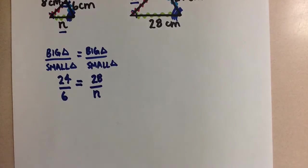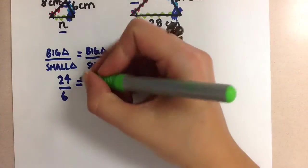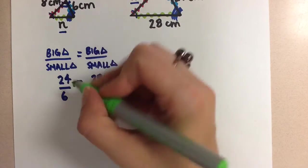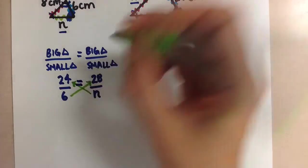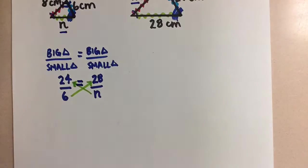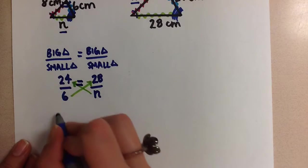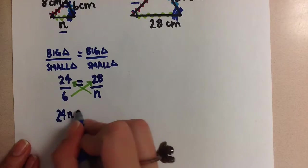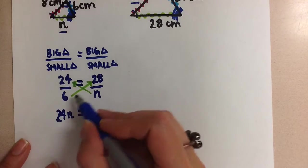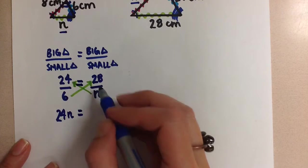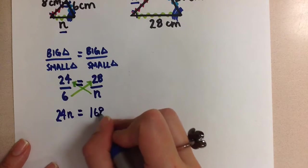We solve the proportion by first cross multiplying to eliminate the fractions, because we don't like to see those fractions. That usually scares us, so we're going to get rid of them. So n times 24 gives us 24n on the left, and on the right, 6 times 28 is 168.